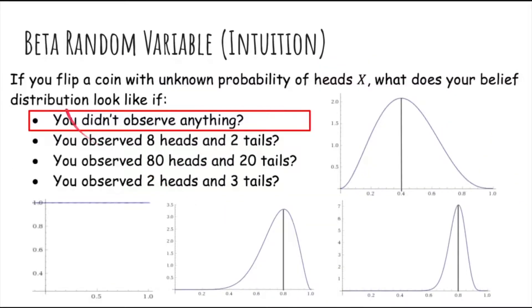So let's do some more examples. If you flip a coin with an unknown probability of heads x, what does your belief distribution look like if you didn't observe anything? Well, it's uniform like we discussed, because since we have no historical data, every single valid probability should just be treated as equally likely. We have no reason to prefer any over the other.